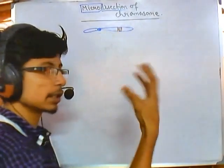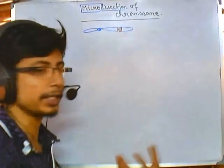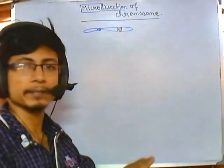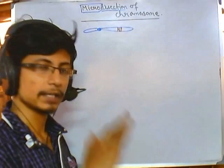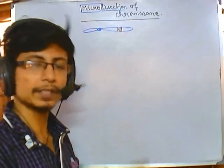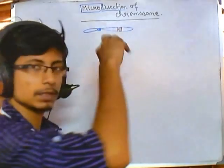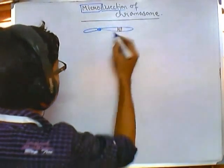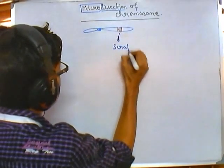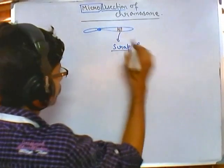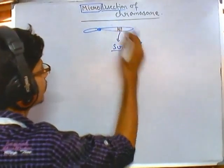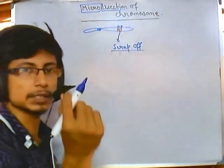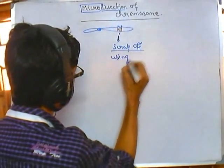We get the best condensed chromosomes by arresting the cell cycle at metaphase. After obtaining the condensed chromosome-containing cells, we plate them on a glass slide and fix them with a fixing reagent. After fixing, we look at the chromosome using a microscope and then scrap off a segment — for example, from a specific region we want to study — using a micro needle.